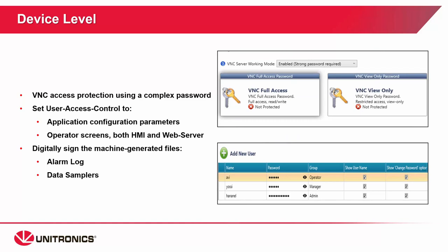VNC is a virtual network connection — it allows you to view the screen remotely when set to server mode. The new UniLogic will require a password when VNC is enabled. We do recommend a complex password so that your HMI is remotely protected. User access control manages HMI users. You can assign different levels to users and assign them to different groups with different permissions on the HMI, which will protect against any accidental HMI interaction. There are also users and passwords on the web server — if a web server is enabled, we recommend utilizing that functionality.